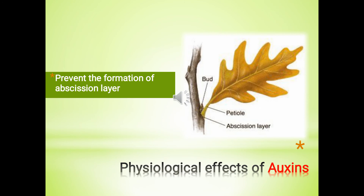Number 5: Auxin prevents formation of the abscission layer. The word abscission means detachment. When the level of auxin declines, a special layer of cells called the abscission layer forms at the base of the petiole or fruit stalk, and afterwards the detachment of plant parts occurs.